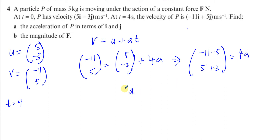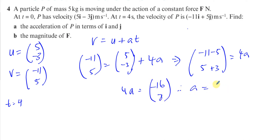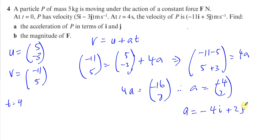So 4A equals the column vector (minus 16, 8). Therefore A is equal to minus 16 over 4, which is minus 4, and 8 over 4, which is 2. So the acceleration in terms of i and j is minus 4i plus 2j. That's the answer to part A.